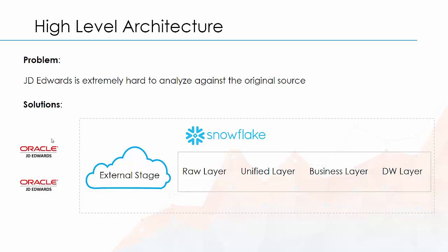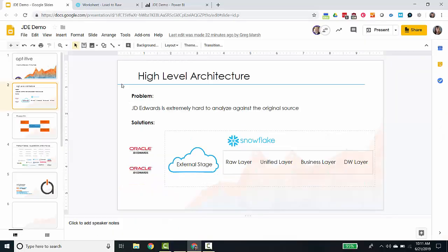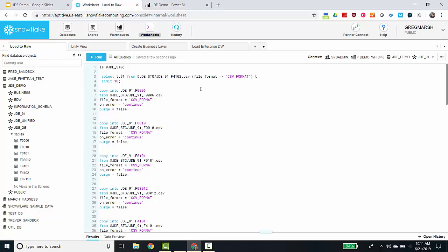After we've loaded to the external stage in Azure or AWS, the first step is a copy from the external stage into Snowflake's raw layer. I've brought in five or six tables, but we would bring in whatever tables we need to analyze. Today we're going to be focused on sales history and being able to analyze that sales history by product and organization.